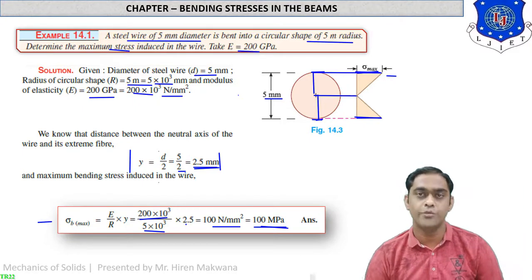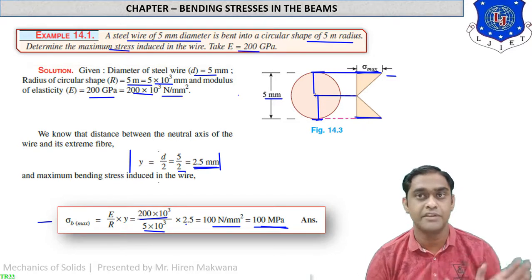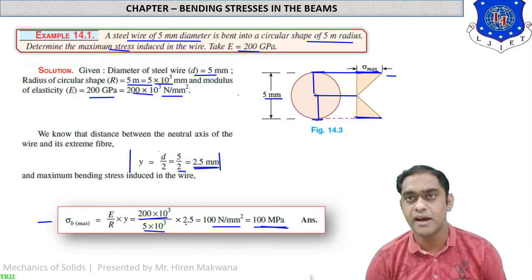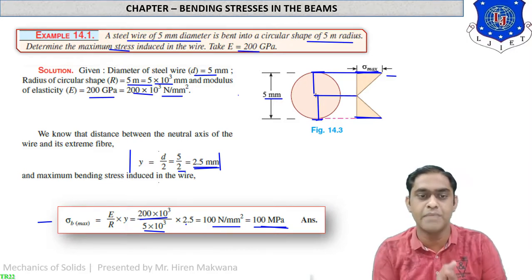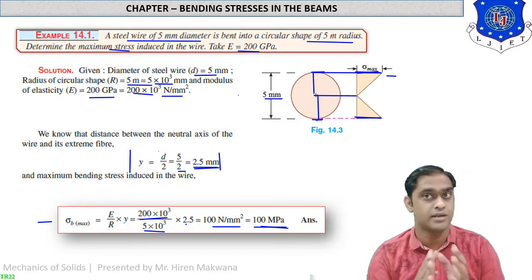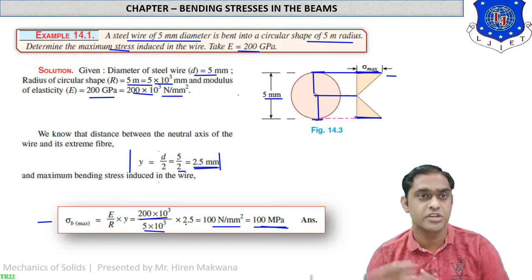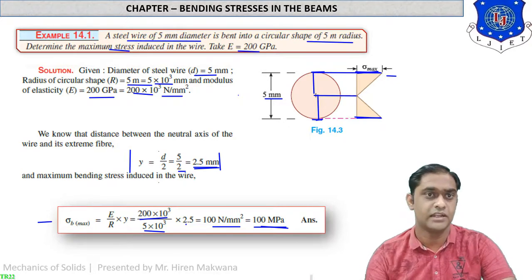This is a very simple numerical. The formula to remember is σ/y = E/R, or equivalently σ_bending = (E/R)×y. Using this formula we can calculate the stress induced in the beam.